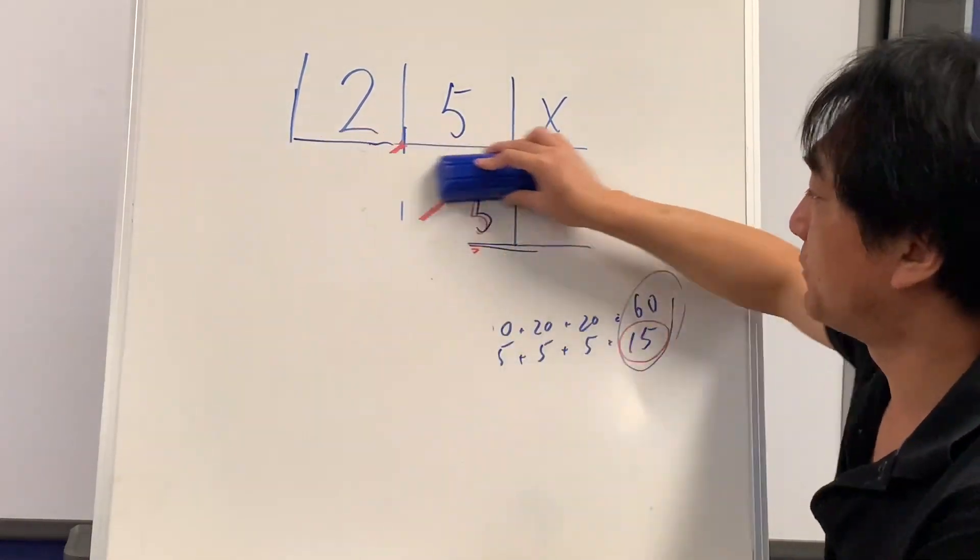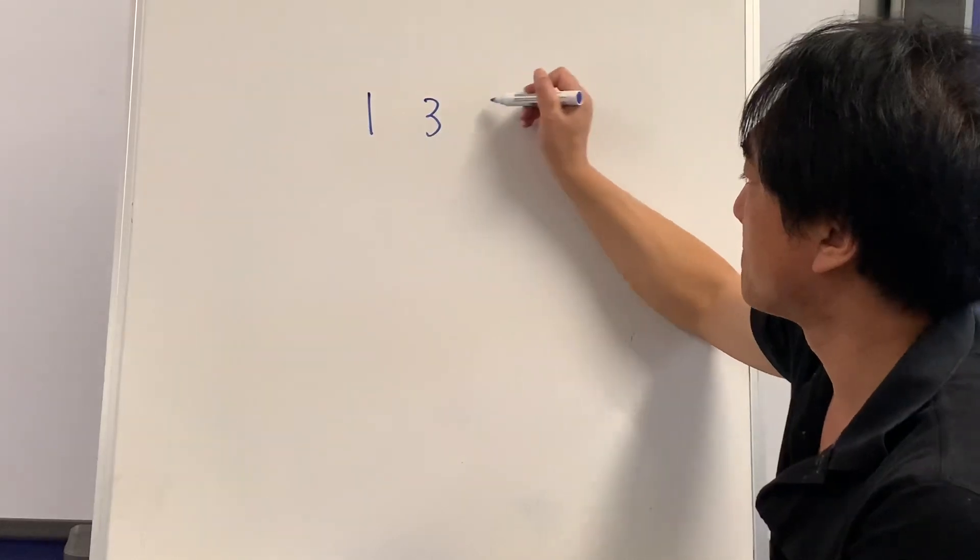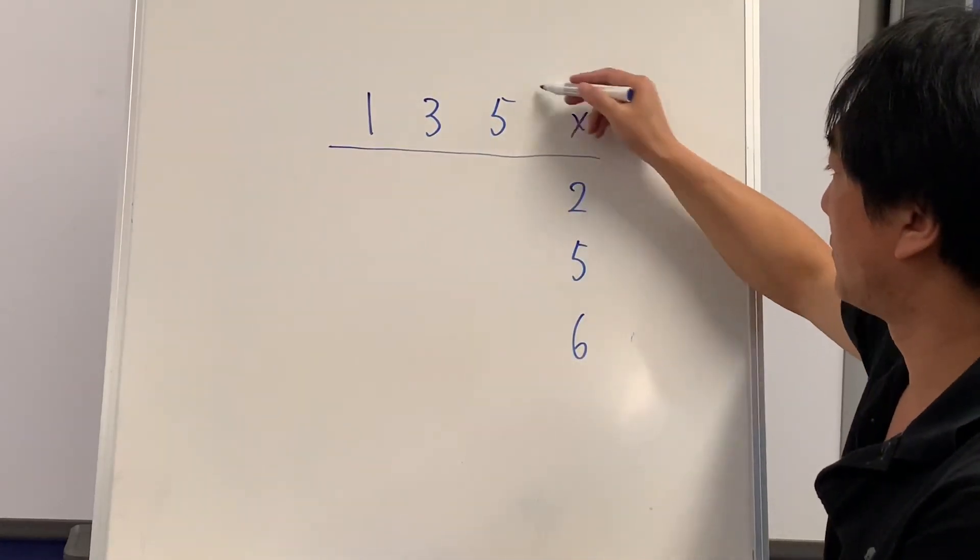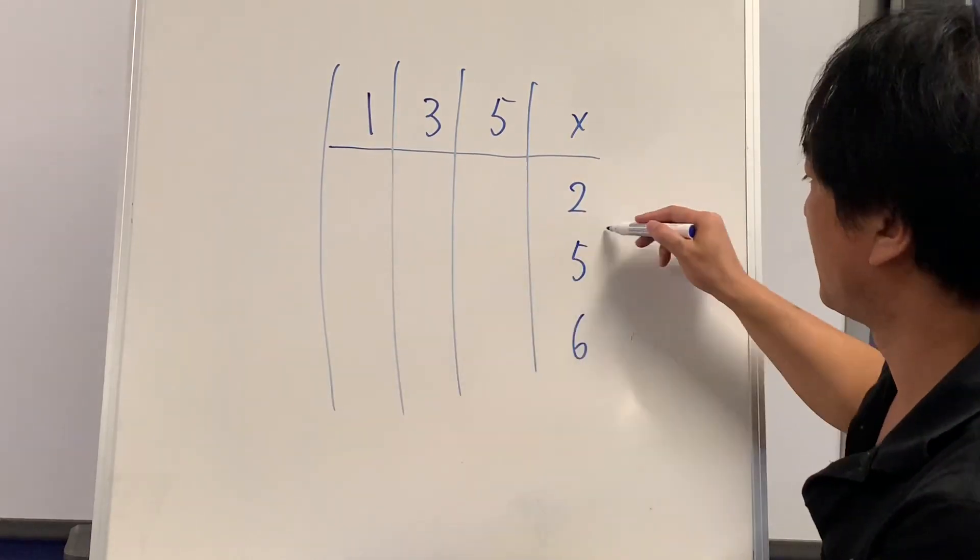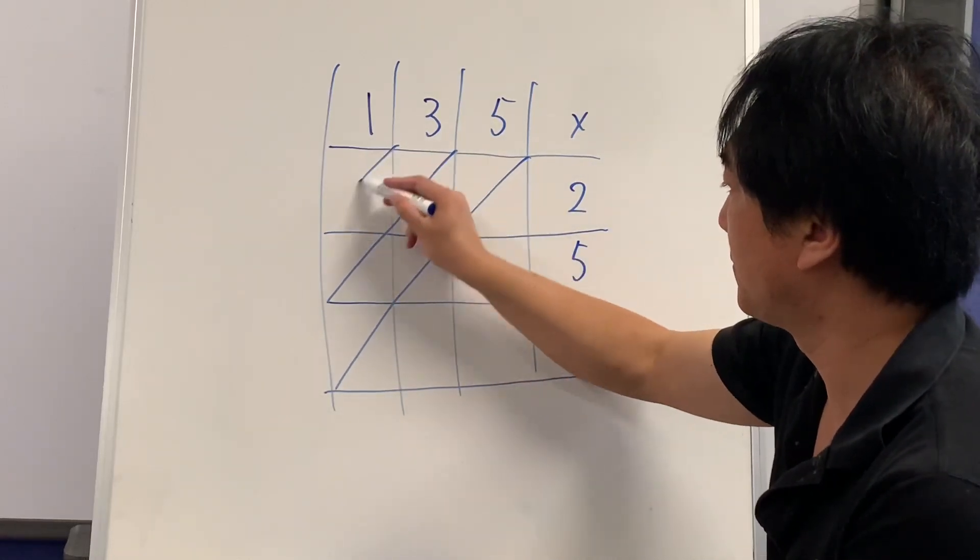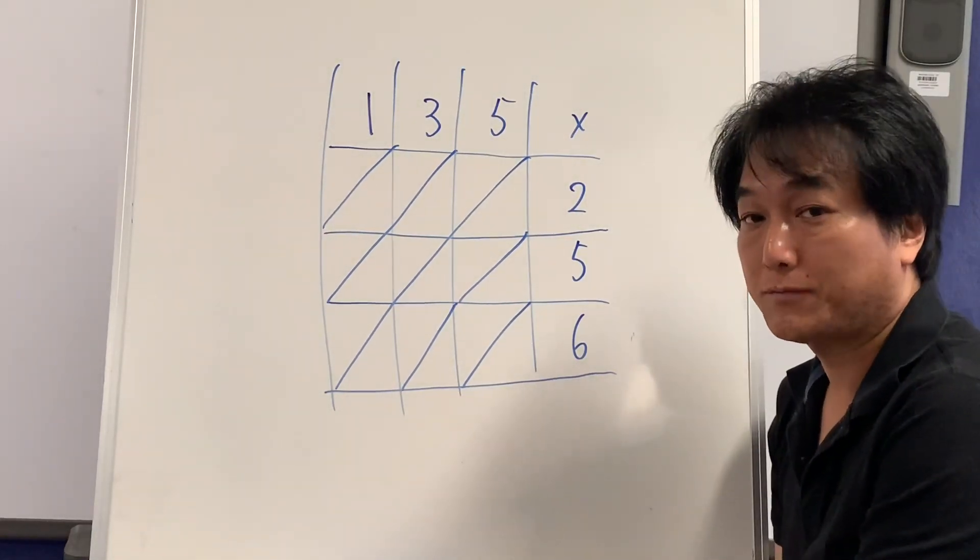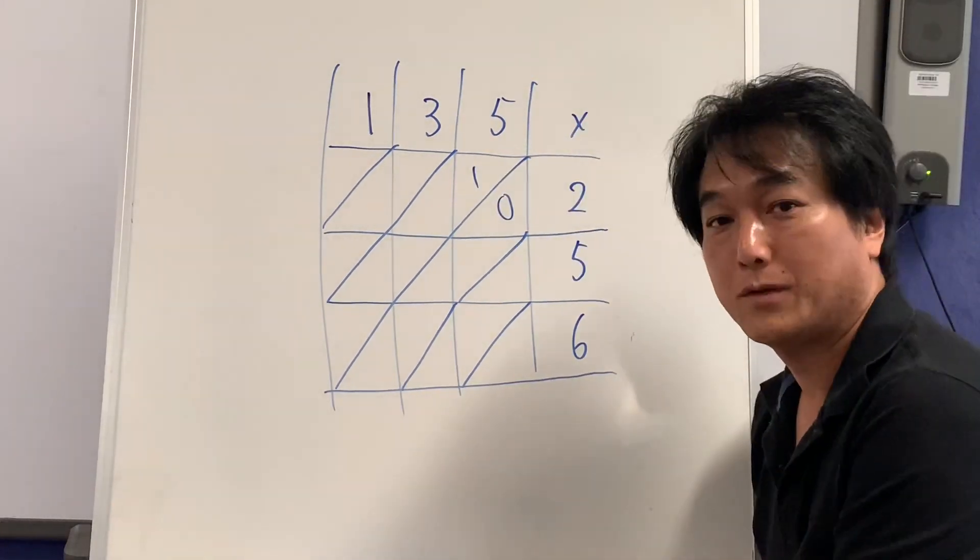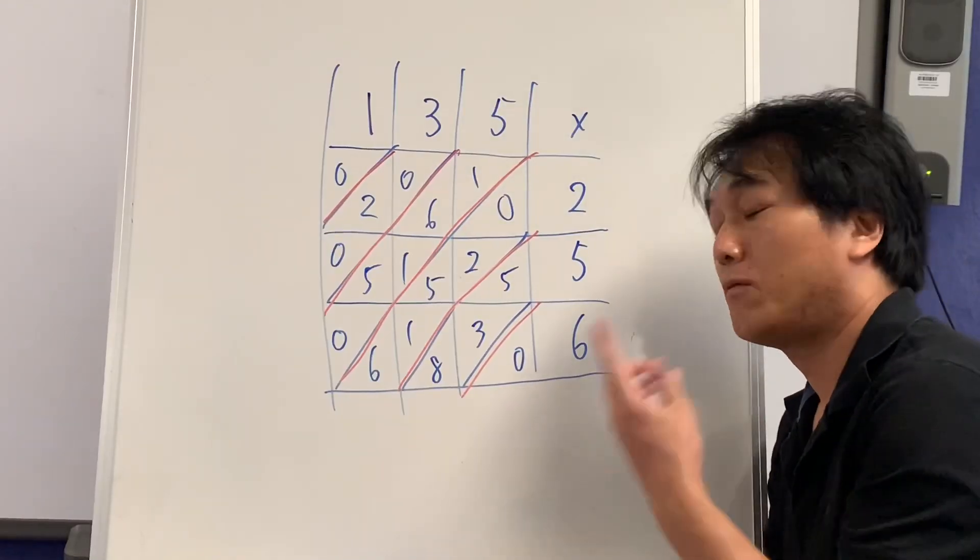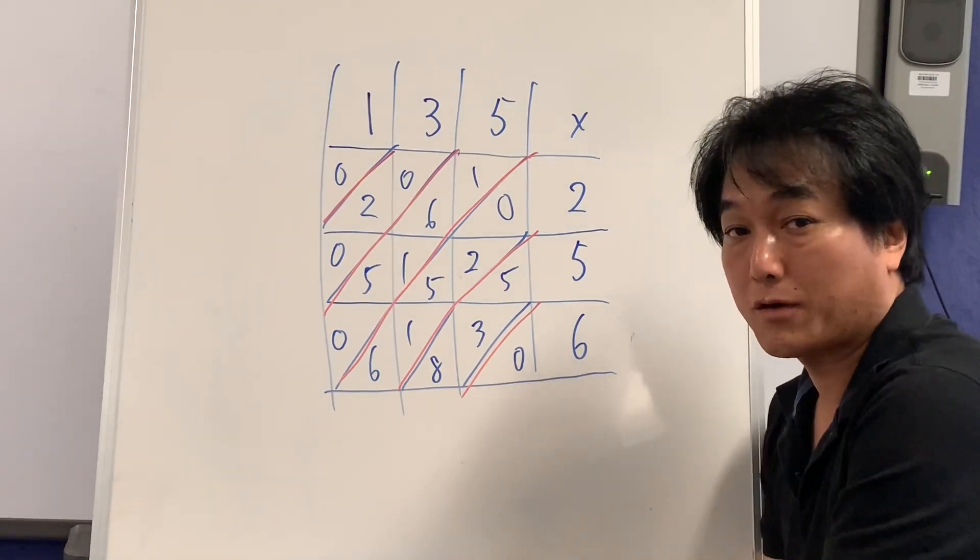If you master lattice, you can do three times three, I mean three digit by three digit. Let's give it a shot. I'll start the first bit for you. Let's pause the video and try this. I just populated the inside of lattice. Let's see what answer you got.